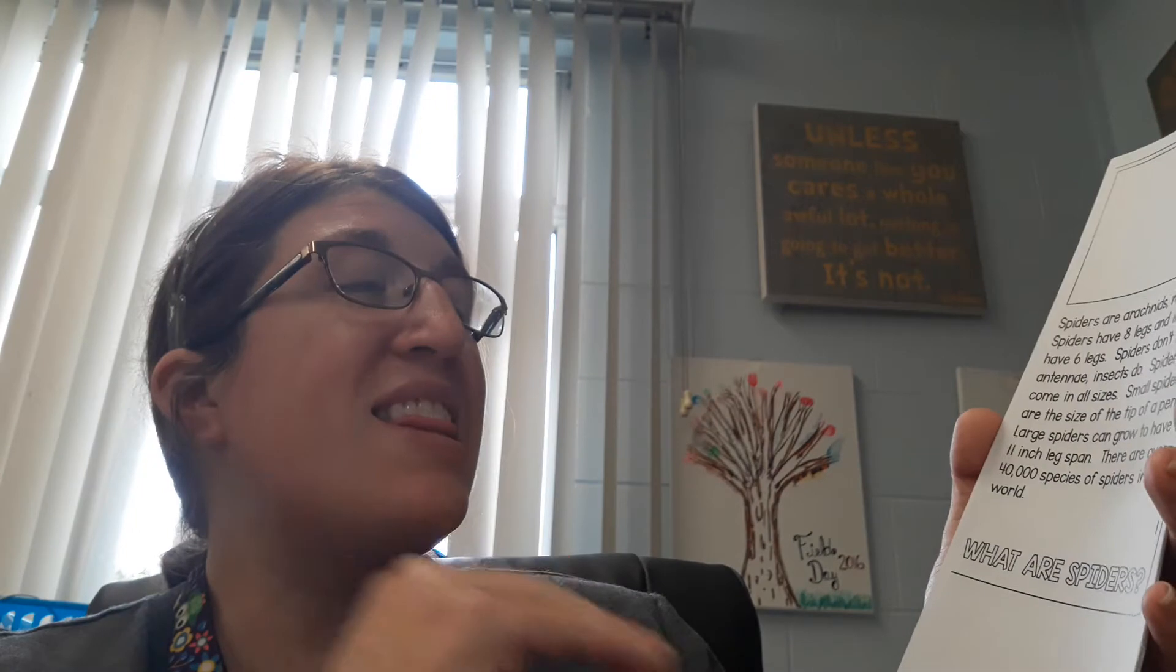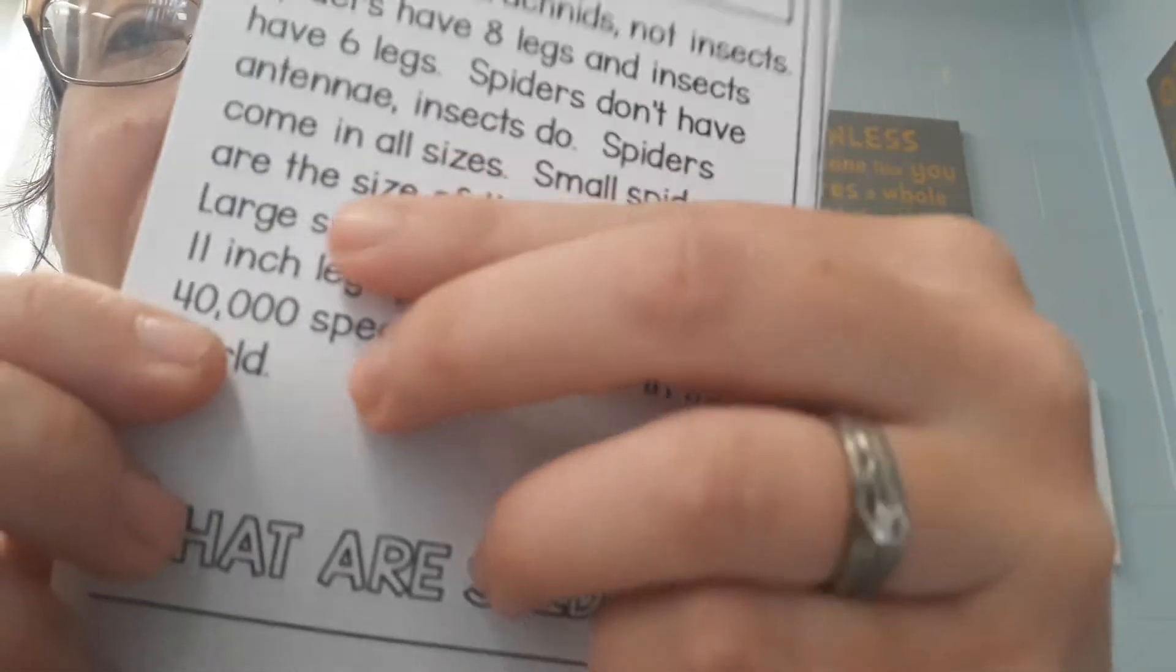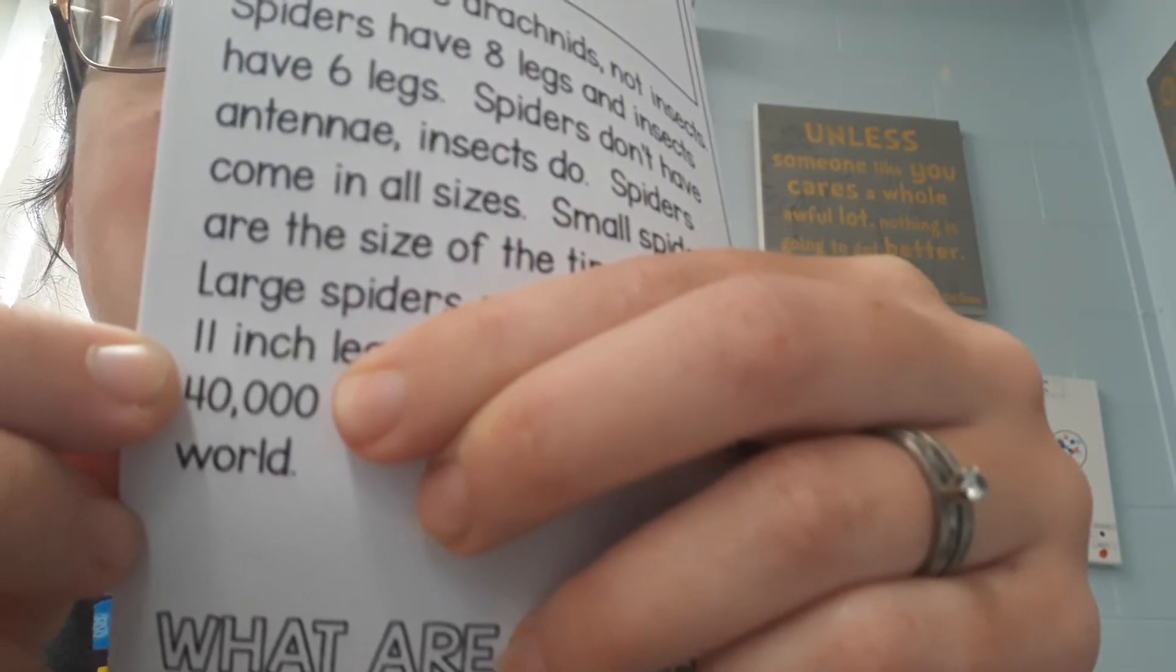There are over 40,000 species of spiders in the world. Look at that number. 40,000. That is a big number.